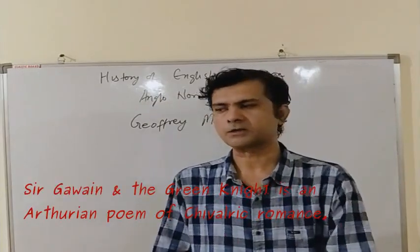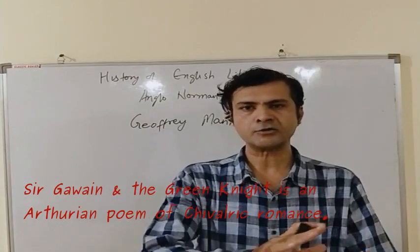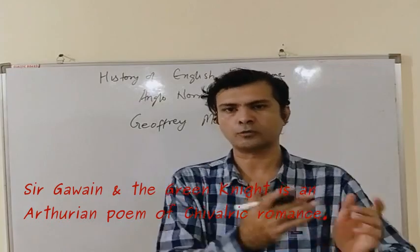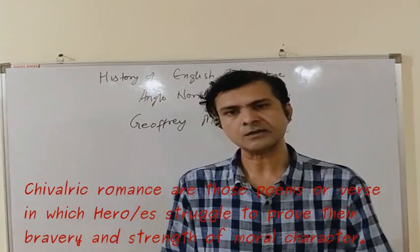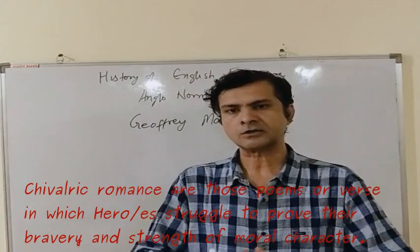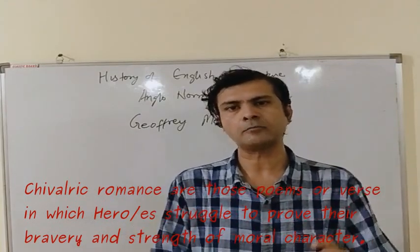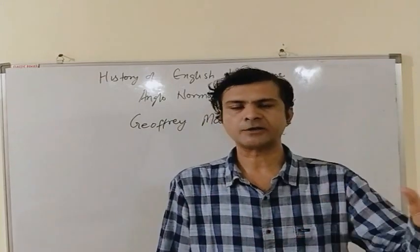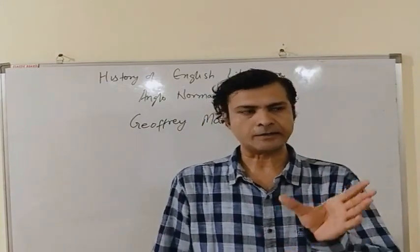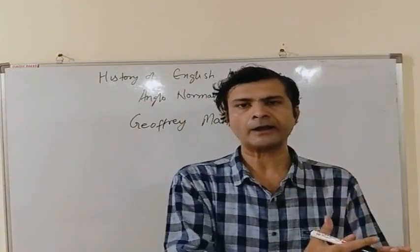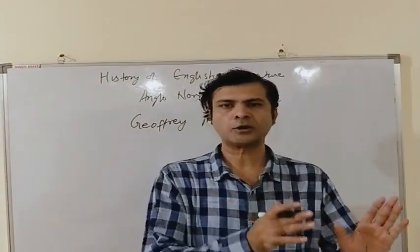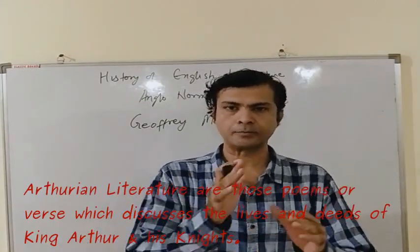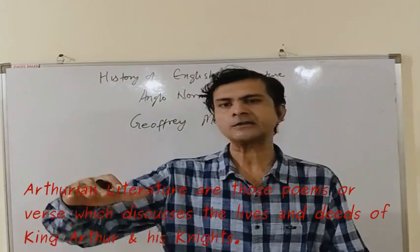The first poem, Sir Gawain and the Green Knight, is a poem based on chivalric romance. Chivalric romances are stories or poems which describe a hero struggling to prove their bravery and moral character. This poem is also an Arthurian poem — that is, it is literature which discusses the legend of King Arthur and his knights.